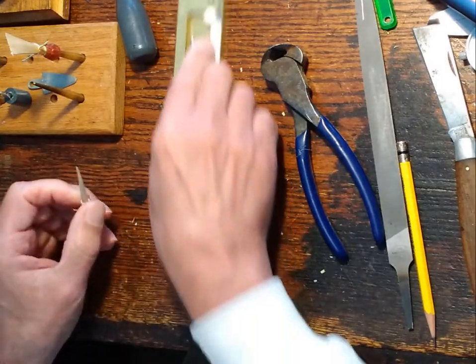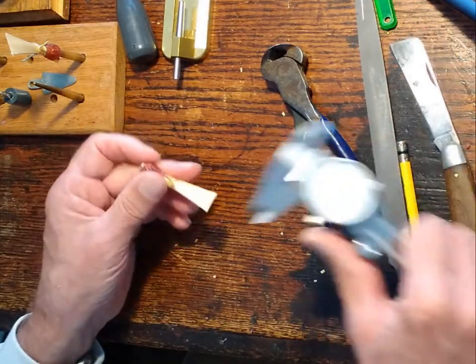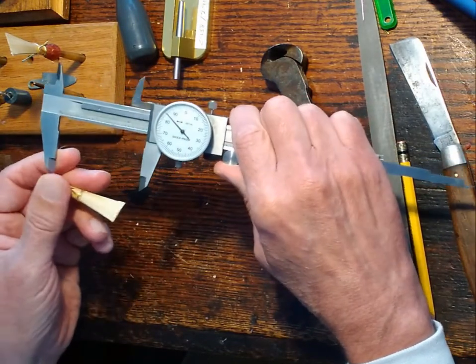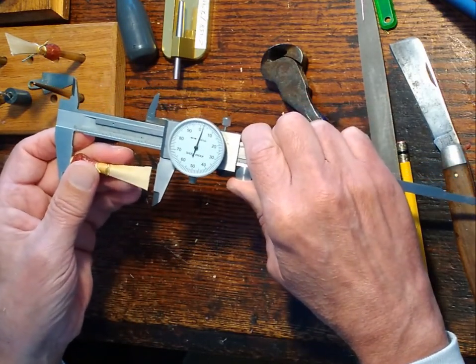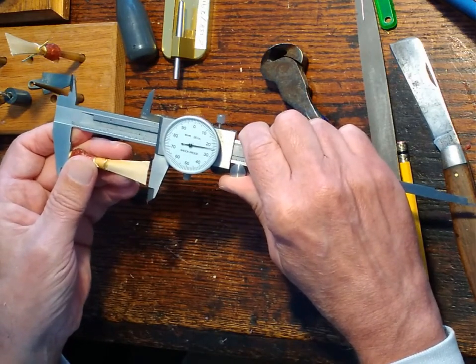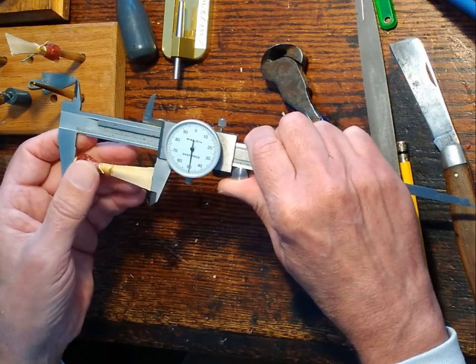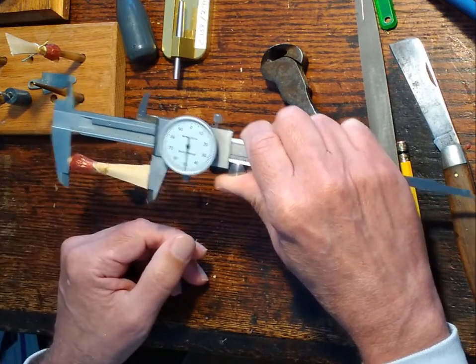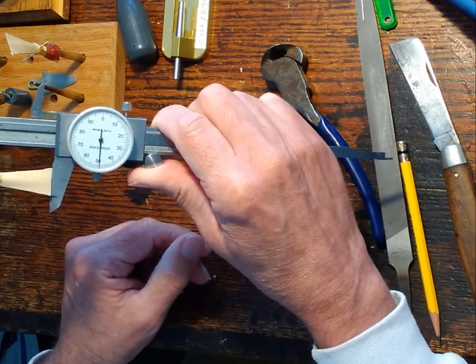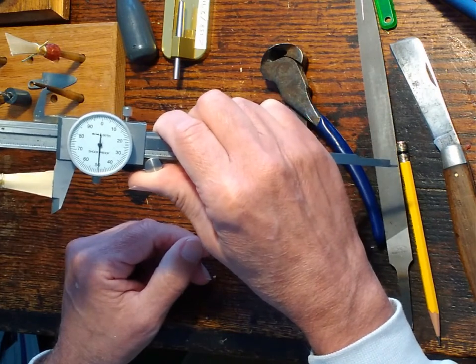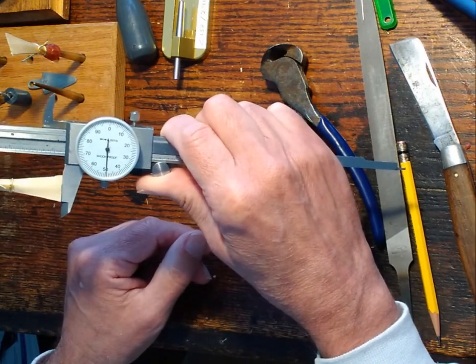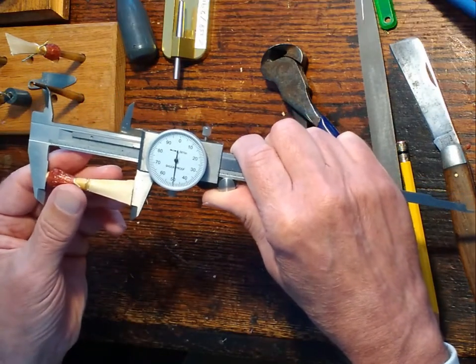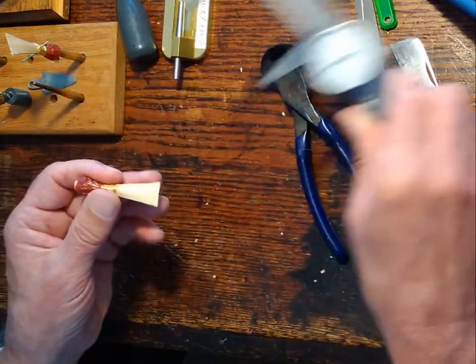I like to work with a dial caliper a lot in doing and working with my reeds, and this is just to see how well I did. 2.249, that's pretty close to 2.5 inches. So I did really well on that.